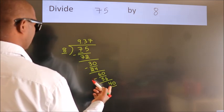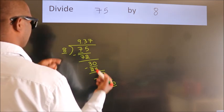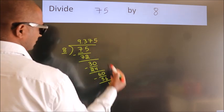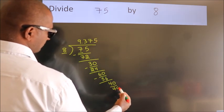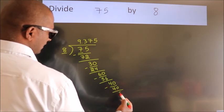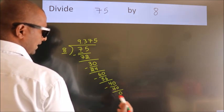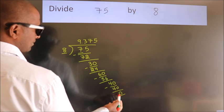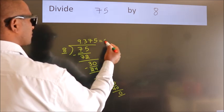When do we get 40 in the 8 table? 8 fives, 40. Now we subtract. We get 0. Here we got remainder 0, so this is our quotient.